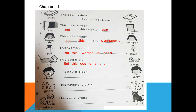Picture number six: clean and dirty — again two different adjectives. Look here, he is clean and he is dirty. 'This boy is clean but this boy is dirty.' Now look at this writing — it is good. But look at this writing — it is not good. Good and bad are two different adjectives, so we use 'but.' 'This writing is good but this writing is bad.'